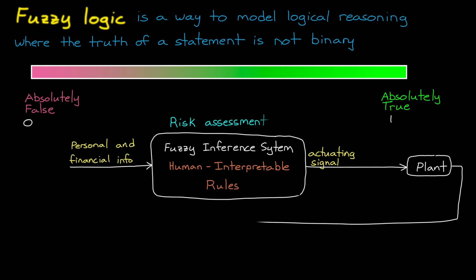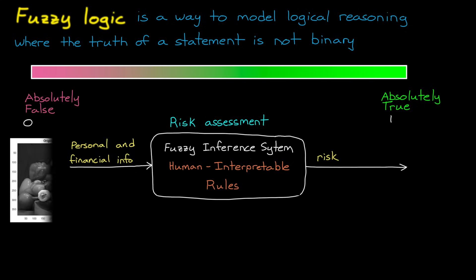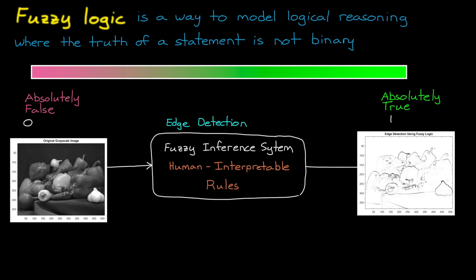For example, a banking system that decides the risk of loaning money to a person based on a set of personal and financial information. And beyond that, fuzzy logic can be used to just answer questions, which is useful for any number of applications. For example, it can be used for detecting edges in images by answering the question, to what degree does a pixel belong to a region of uniform intensity versus an edge region? Something really cool is that developing a fuzzy inference system doesn't require a model, so it works well for complex systems whose underlying mechanisms are not fully known. As long as you have some experience and intuition about the system, the rules can be developed and implemented. It's really powerful, super interesting, and can be applied to many different scenarios.